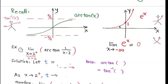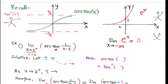Let's take a look. We try to find the limit as x approaches 2 from the right of arctan(1/(x − 2)). This is a composition of the outer function arctan with the inner function 1/(x − 2). We let this inner function equal a single variable t, so let t = 1/(x − 2).